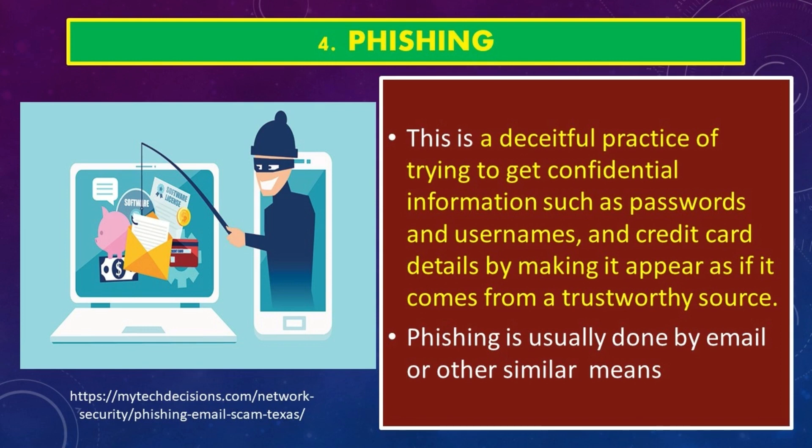The next danger on the internet is phishing. Phishing is a deceitful practice of trying to get confidential information such as passwords, usernames, and credit card details by making it appear as if it comes from a trustworthy source. Phishing is usually done by email or other similar means using a popular entity such as Microsoft, Yahoo, Google, Amazon, and financial institutions to lure you to their website. Internet users would think that they are accessing a genuine website, and through this way, a phisher would be able to gather sensitive information from internet account users.